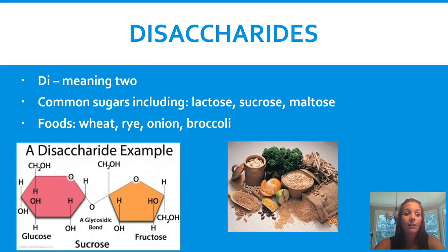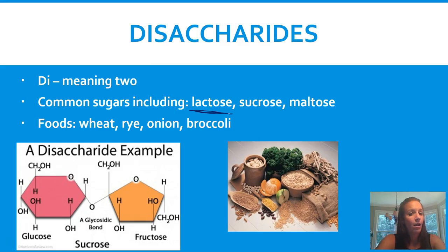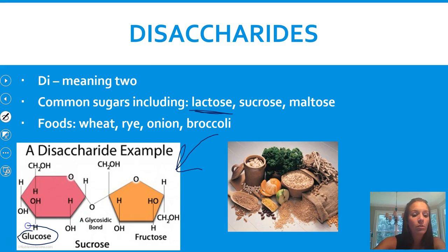Disaccharides — di meaning two. Some common disaccharides are lactose, which is what's in milk, sucrose, and maltose. Foods that include these are wheat, rye, onion, and broccoli. If you look at the image, you'll see a double sugar or double ring sugar. Glucose and fructose combined together make sucrose.